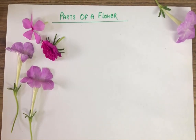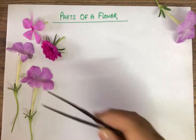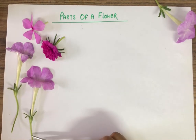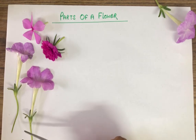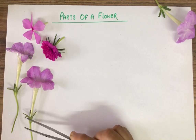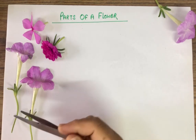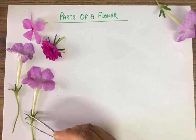Welcome to my channel. Let's study the different parts of a flower. As there are different types of flowers, we will study the different parts. Let's see this flower. This part is pedicel, with which the flower is attached to the plant. The second part is sepals — these are the sepals.